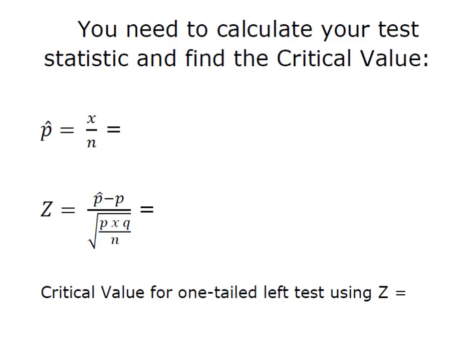P hat is simply those out of our sample that possessed the characteristic of interest, and that was our 45 out of 65, which gave us a sample proportion of 0.692. We're going to use that 0.692 down here to calculate our Z, which will be our test statistic.